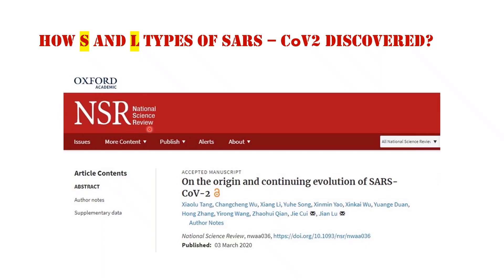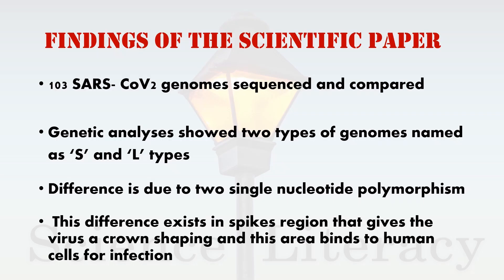An article published in National Science Review entitled 'On the Origin and Continuing Evolution of SARS Coronavirus 2' described how S and L types of SARS coronavirus 2 were discovered. In the findings of the scientific paper, experiments conducted on 103 SARS coronavirus 2 genomes were sequenced and compared. Genetic analysis showed two types of genomes named as S and L types. The difference is due to two single nucleotide polymorphisms, existing in the spike's region that gives the virus its crown shape and binds to human cells for infection.